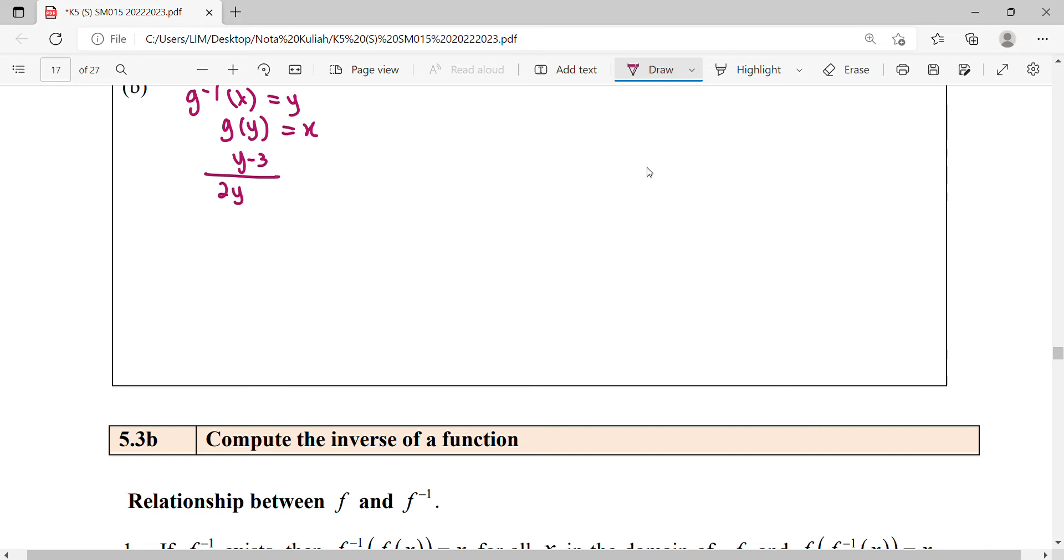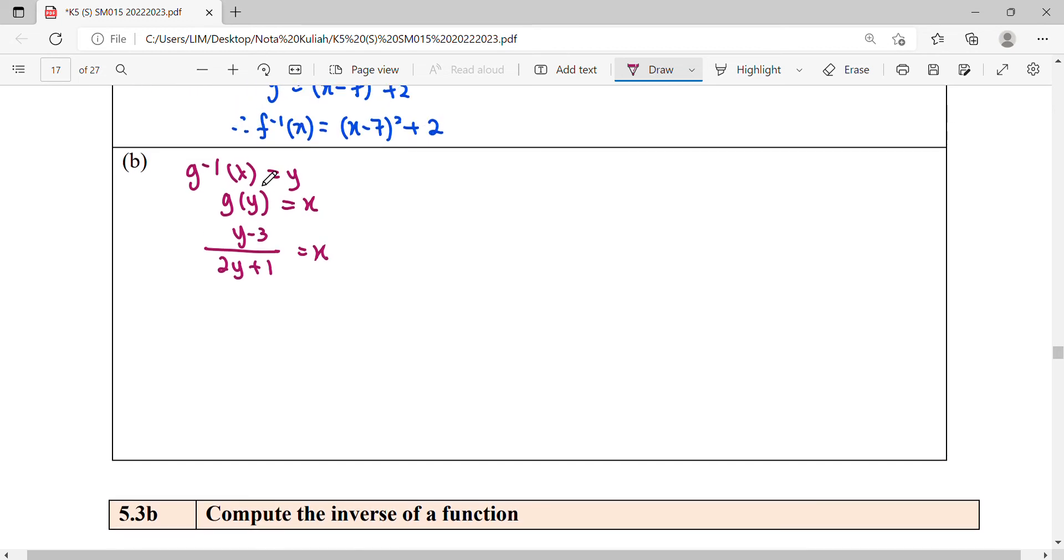Try to simplify for y, then it will be your g inverse. So you multiply this to the right hand side, giving you 2xy plus x. What you need is the y term, so collect your y terms: y minus 2xy. Move the 3 to the right hand side: plus 3.